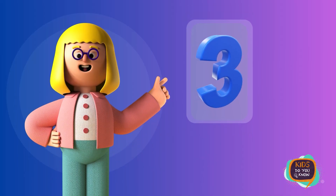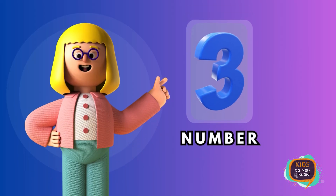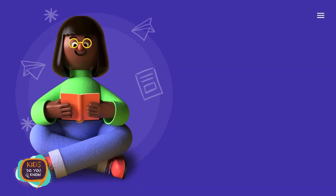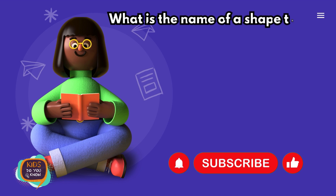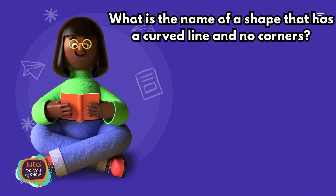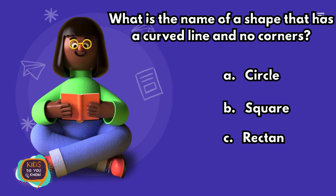Number 3. What is the name of a shape that has a curved line and no corners? A. Circle. B. Square. C. Rectangle. D. Triangle.